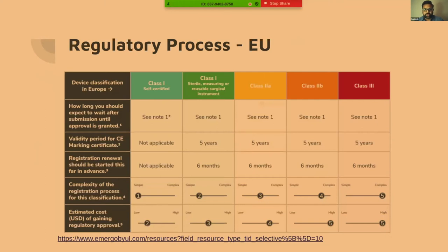This is mostly about Europe. You can see the classifications: class one self-certified is the easiest to get through — you basically get through with an IFU and a notification process. For class two A and above, you need a notified body. Even for class one reusable, sterile, and measuring devices, you'll have to go through a notified body audit, though it's more of a micro audit compared to the full-fledged audit for class two A, two B, and class three.